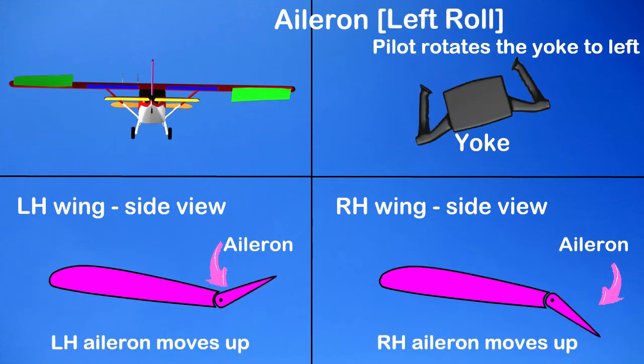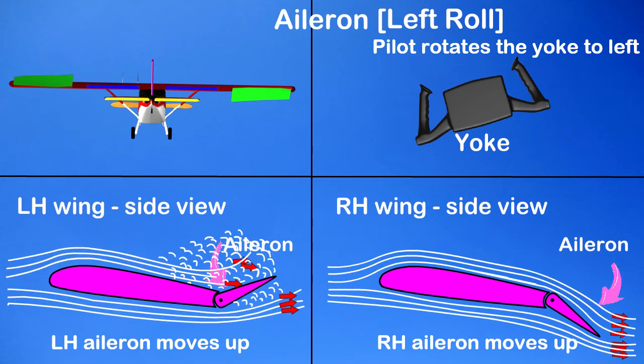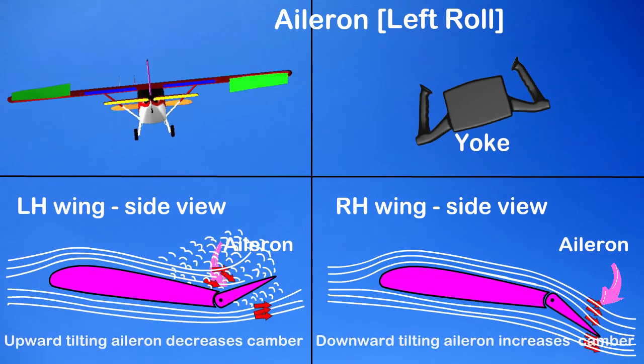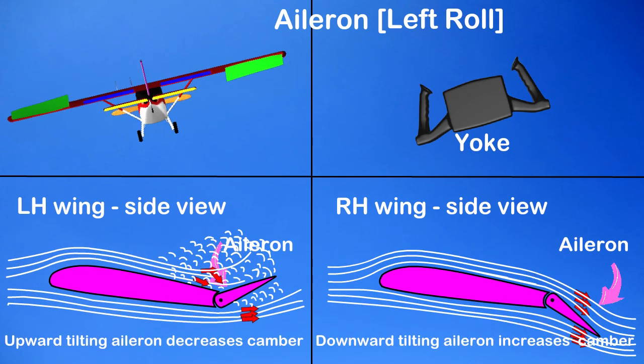The left hand aileron moves up and the right hand aileron moves down. The upward tilting aileron decreases the camber and the downward tilting aileron increases the camber.